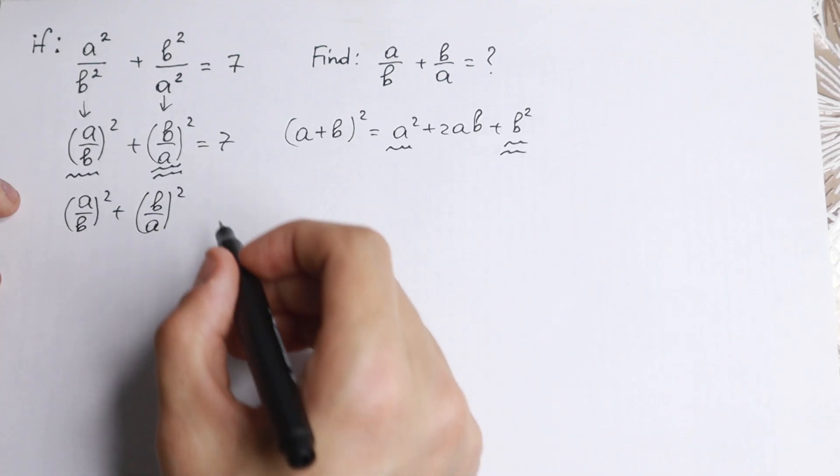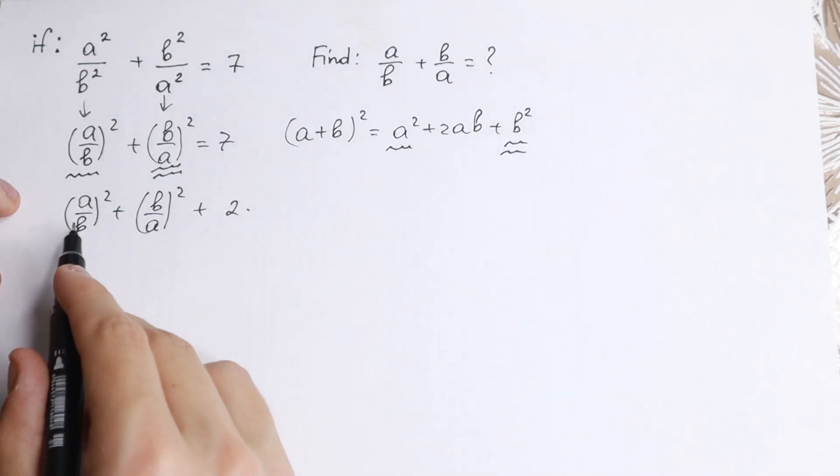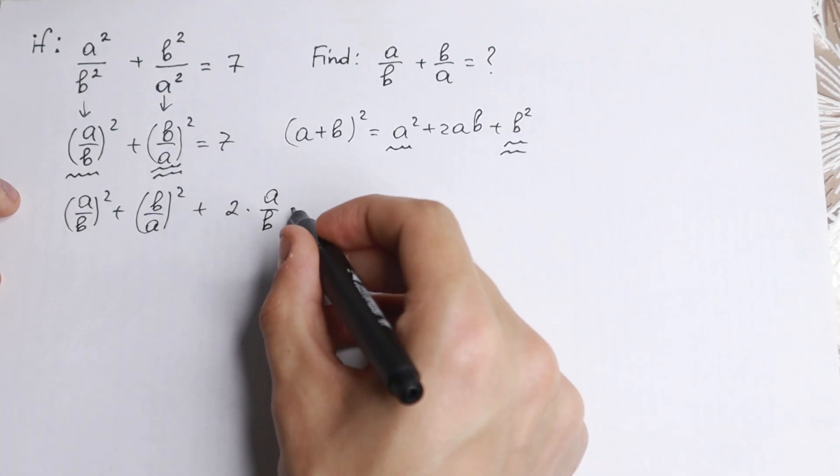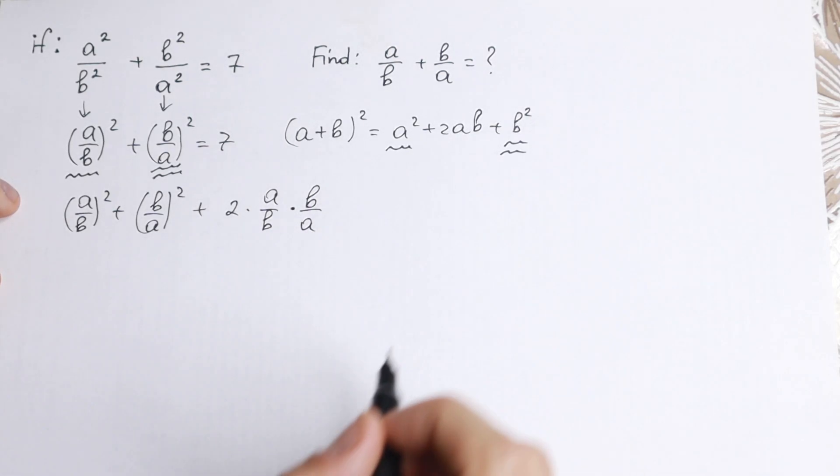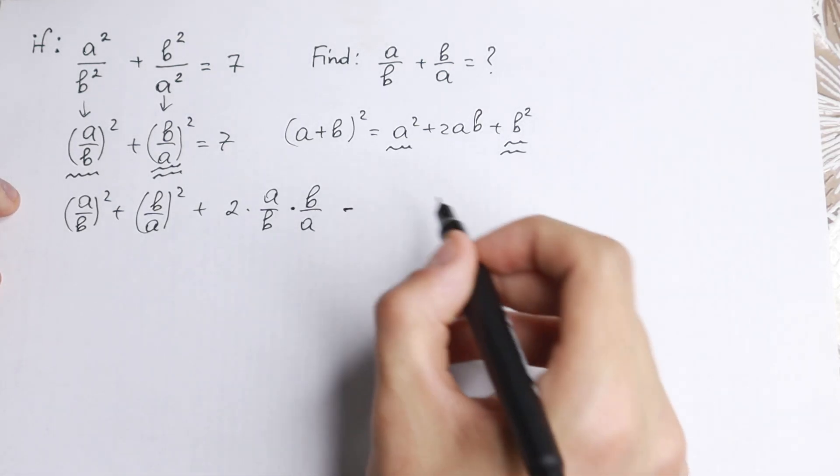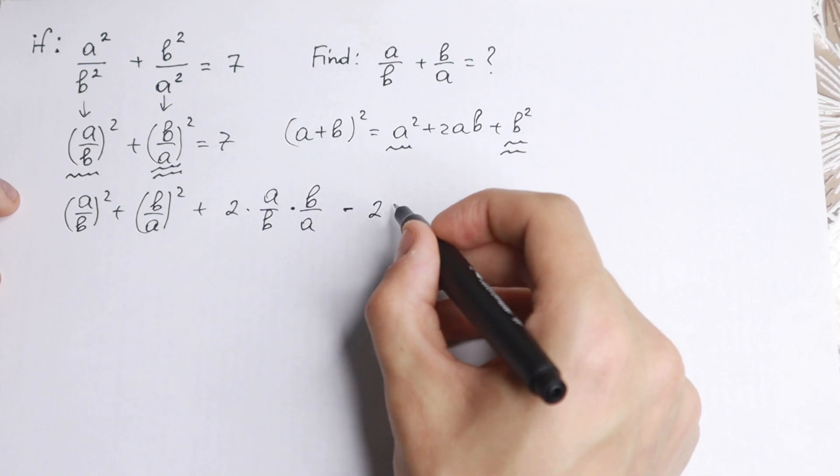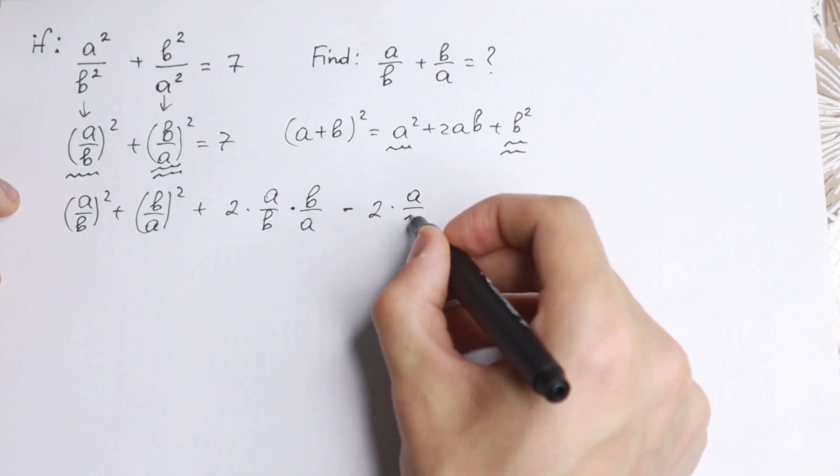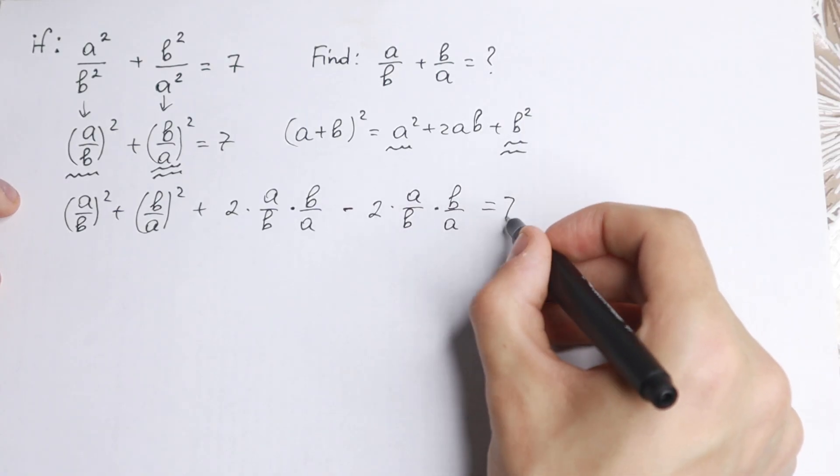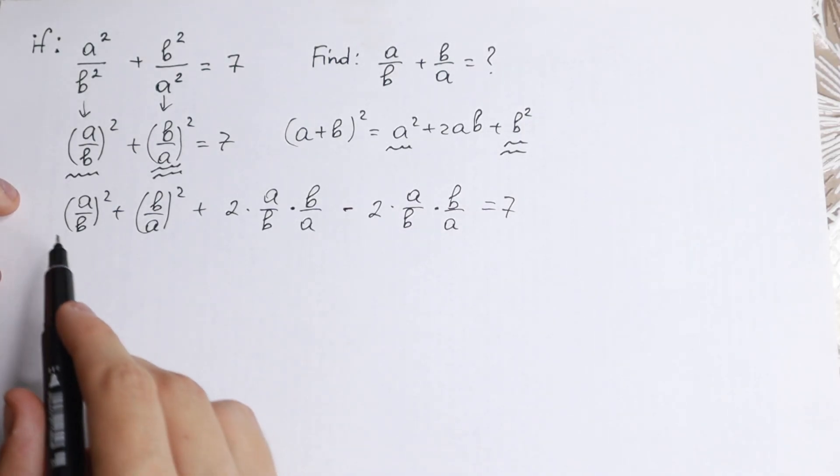If we write this one as plus two times first times second, so we have times a/b and times b/a. If we write it in that way, but if we add it, we need to subtract it because we need nothing change. So times minus 2 times (a/b) times (b/a), it's equal to 7.